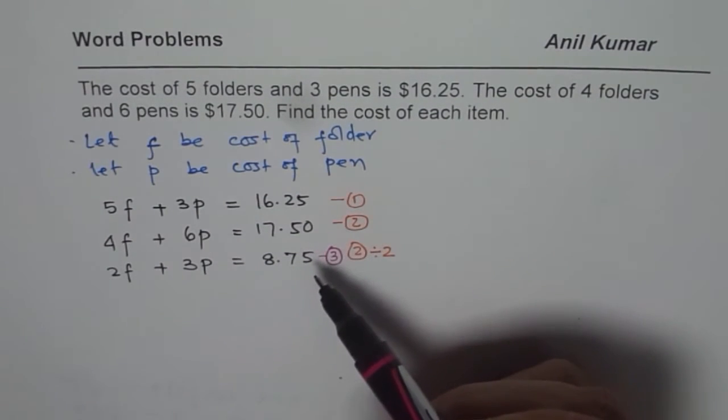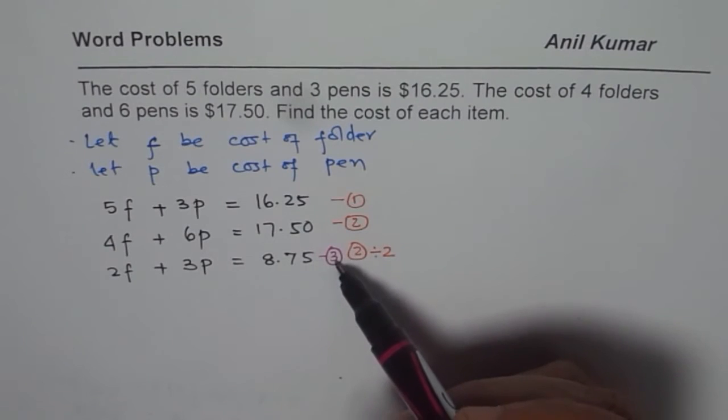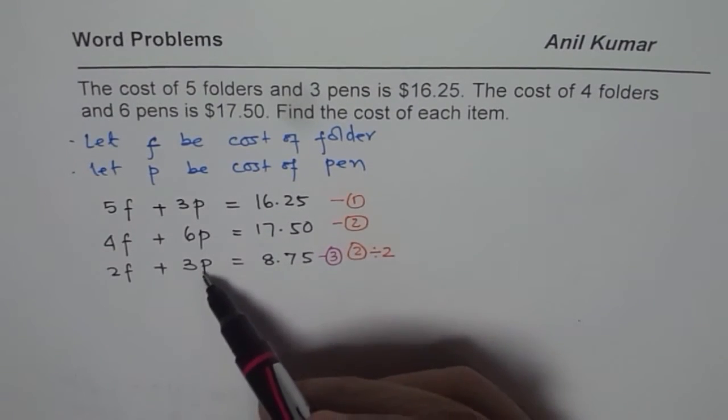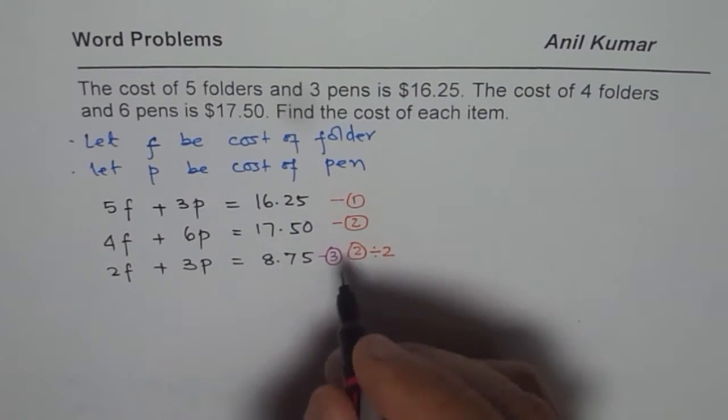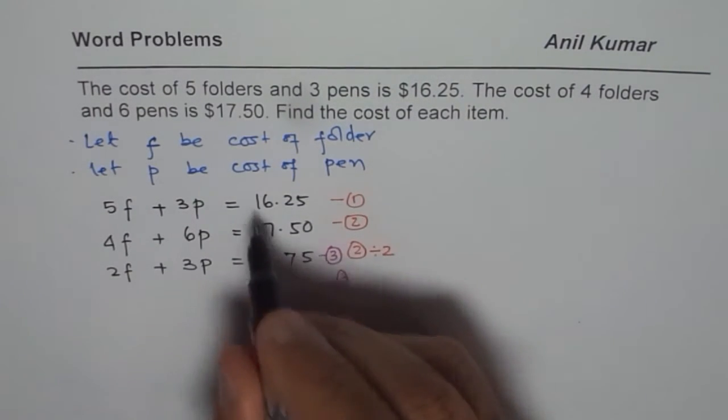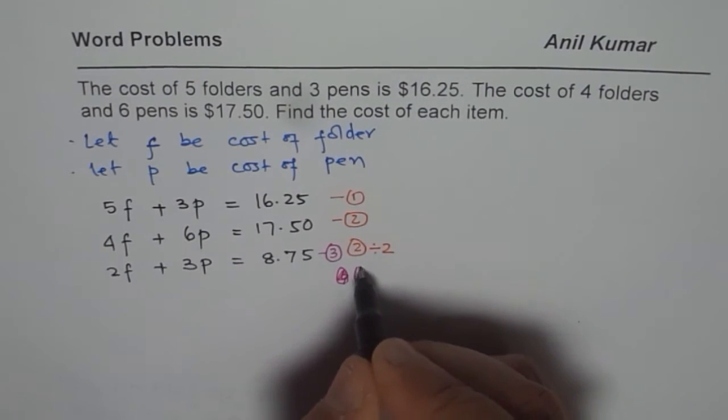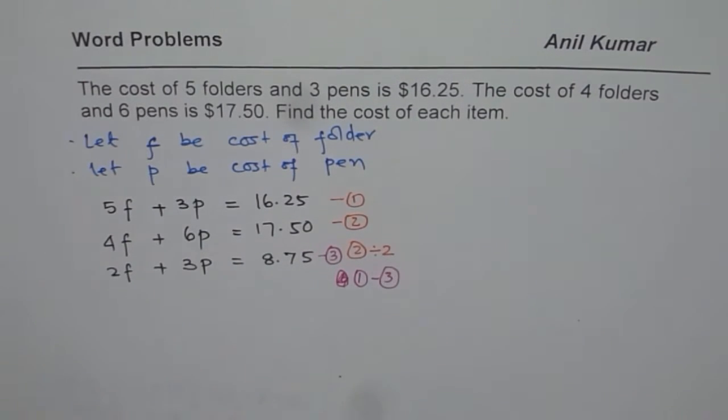If you notice, taking away equation 3 from 1 will eliminate the second variable. So we will do equation 3. Well, actually I should write, because this is a bigger number, let me write equation 1 minus 3. It will be easier for us.